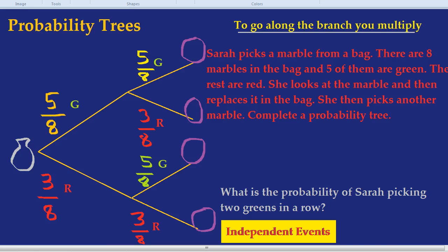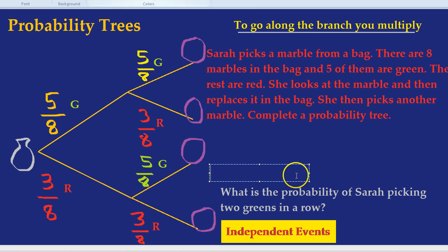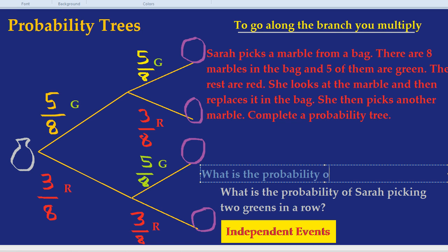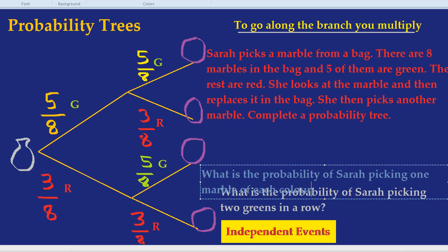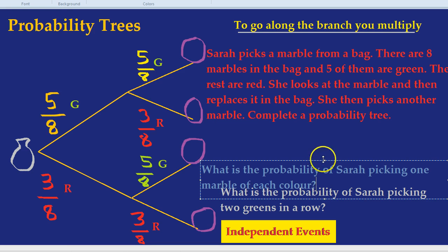Now a final question. What are the chances of her picking one of each color? What is the probability of Sarah picking one marble of each color? Think about that. Which two branches represent that outcome, having one of each color?